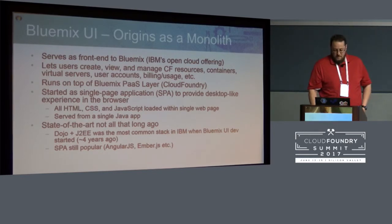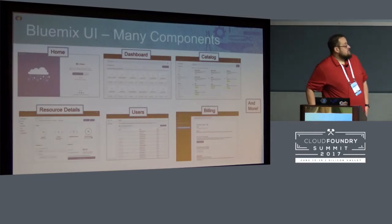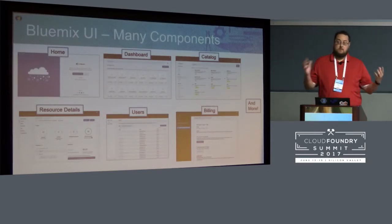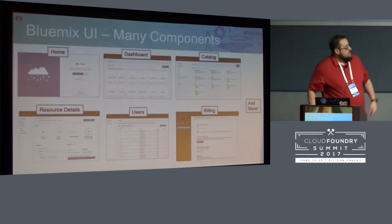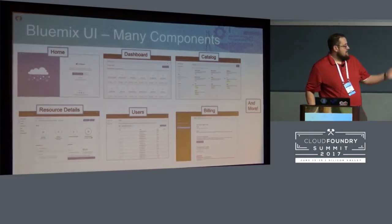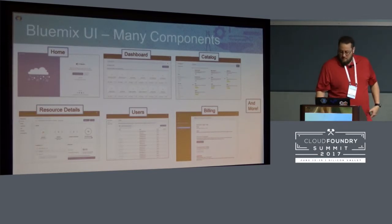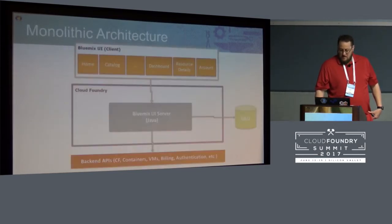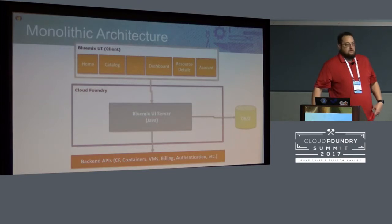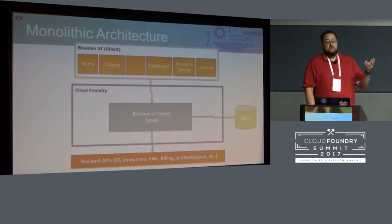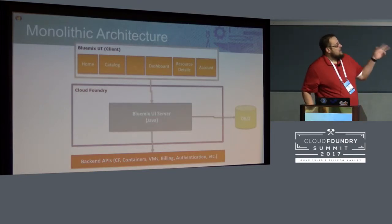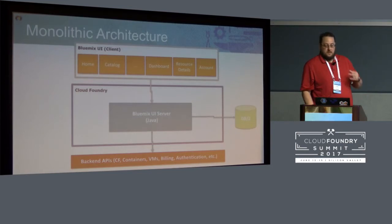We've started moving to other stacks. The Bluemix UI is pretty large — there are five or six different pages: dashboard, catalog, resource details, like manager, Cloud Foundry apps, users, billing, and a whole lot more. This is a diagram of the monolithic architecture that we started with.